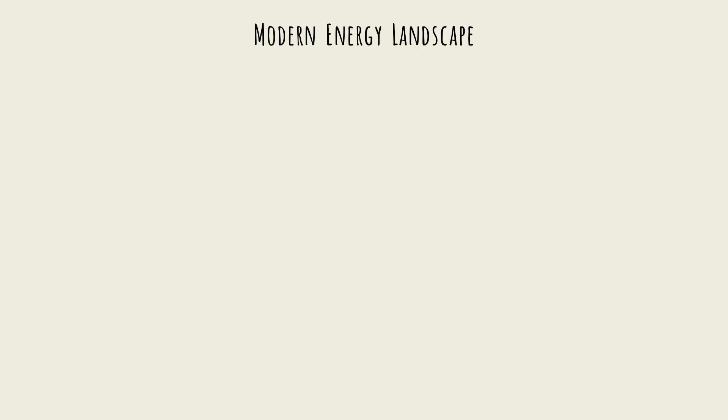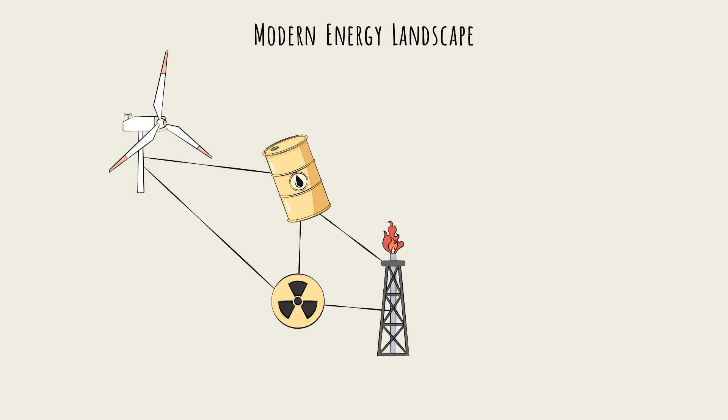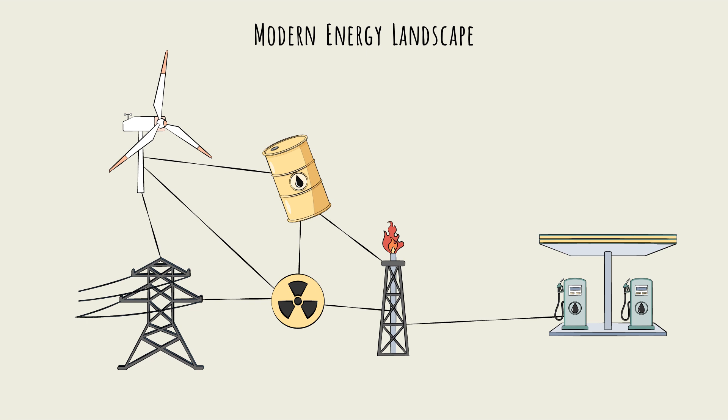The modern energy landscape is a complex web. We have oil, natural gas, nuclear, renewables like wind, and we have gas stations and power lines. Plus batteries fit in the picture somewhere, and hydrogen power is on the rise. Let's parse all of this across this web. We primarily make use of energy in one of two forms: as electricity or fuel.